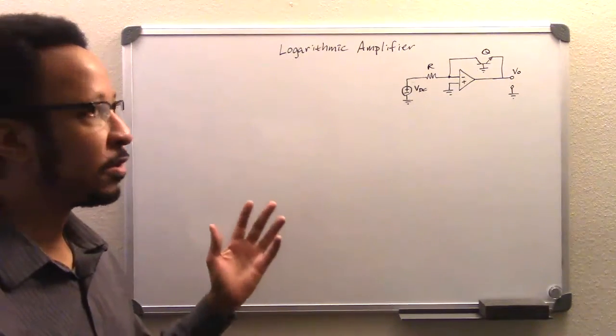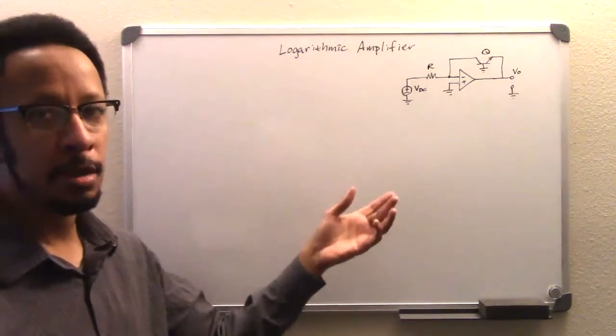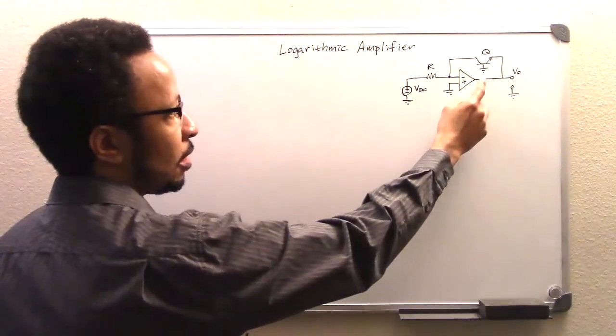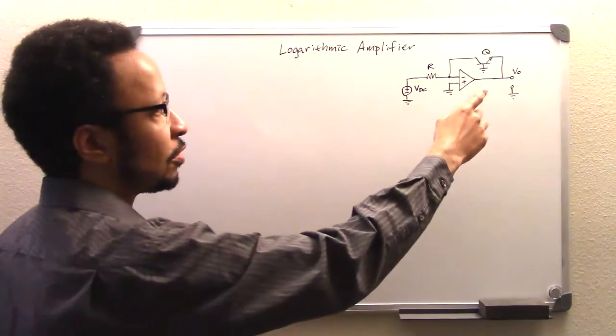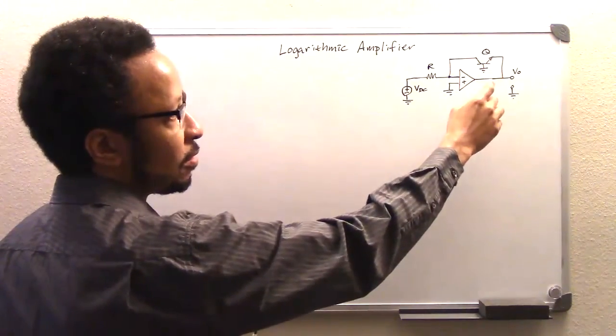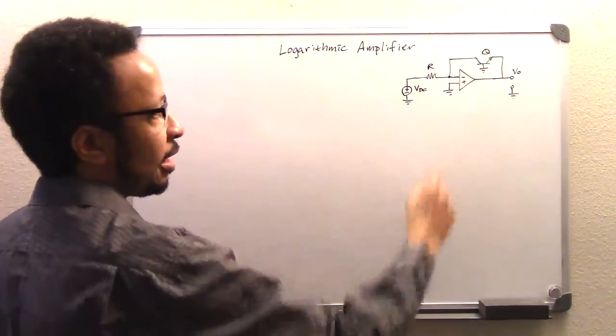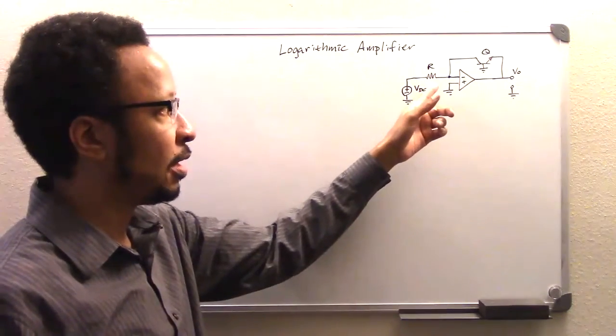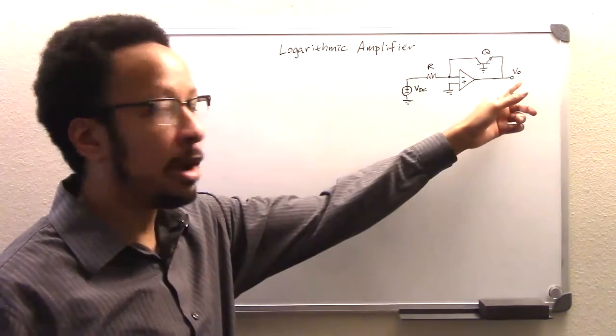And this particular one has been made out of an op-amp here. And so what we have here is a BJT, bipolar junction transistor, just a regular NPN. And we have an operational amplifier here. We have a resistor here. And we're going to take this to be our output.